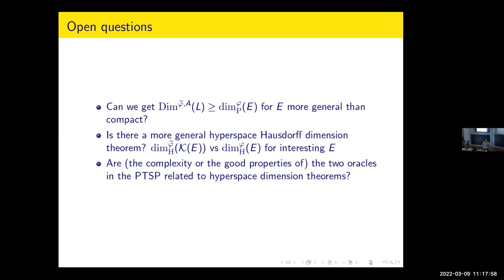Some more concrete questions related mostly to the hyperspace results: it's nice to be able to do this for analytic and compact sets — can you do it somewhere else? You only need an infinitely often lower bound in packing dimension — can we do better than analytic? The big question is: can you do it with Hausdorff dimension, dealing with the infinitely-often case?